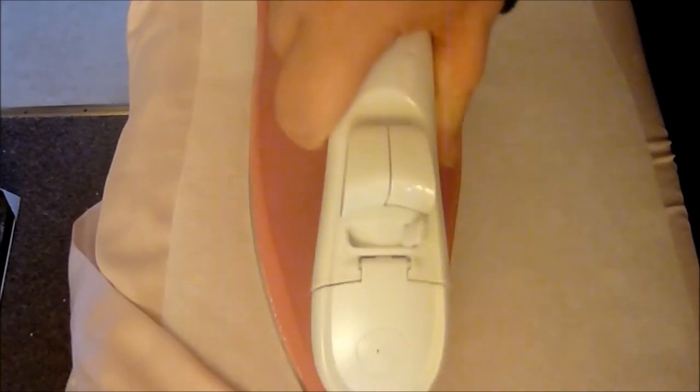I've set my iron to non-steam because you don't want it to be on steam for this, and I'm just going to press down with my iron. Really, to get this to stick, you actually need it on the cotton setting. So I know this is silk, but I've put it on the cotton setting to get the heat required to stick the stabilizer to the garment. And because this is on top of the garment, it doesn't burn.